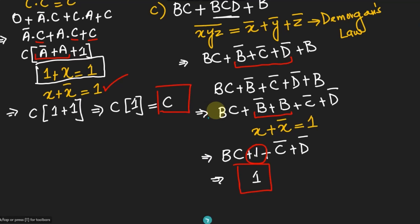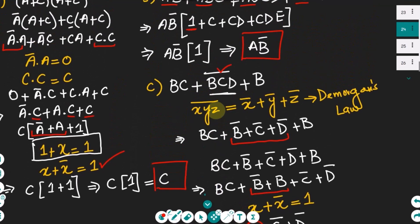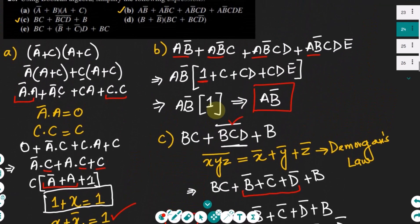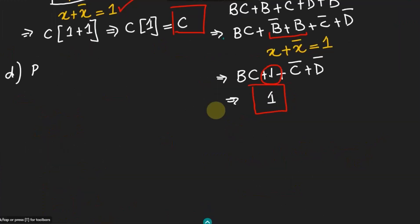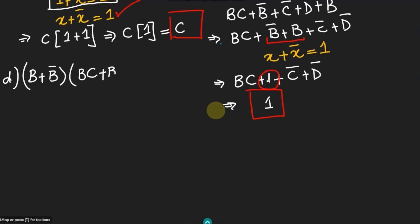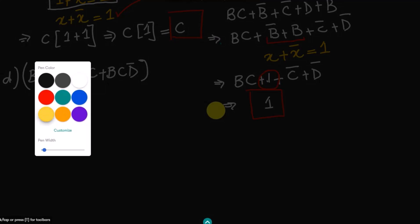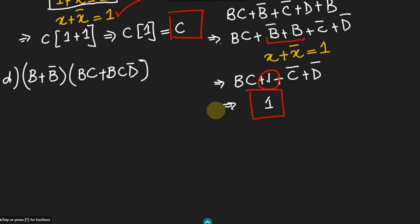Since anything OR'd with 1 is equal to 1, the entire expression simplifies to 1. So the answer to part C is 1. Now let us look at part D. In part D we have (B plus B prime) multiplied by (BC plus BCD prime). According to Boolean law, x plus x prime equals 1.